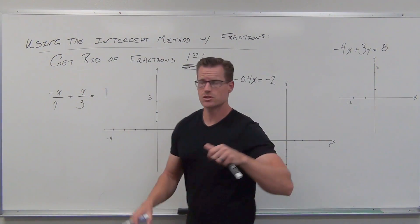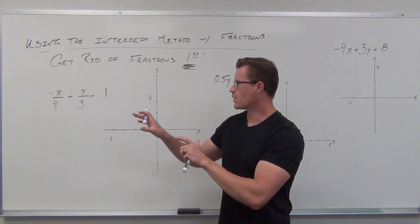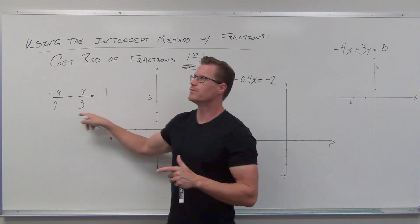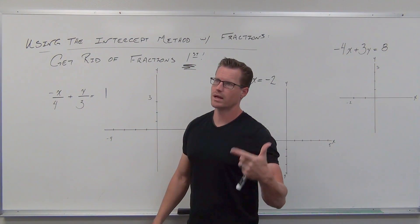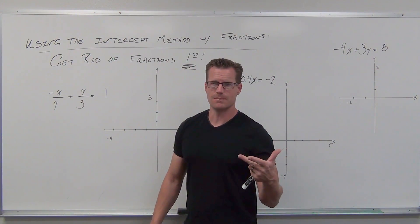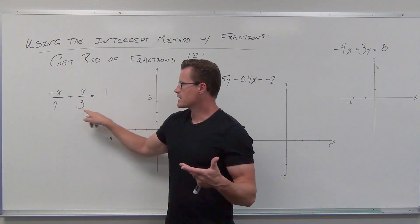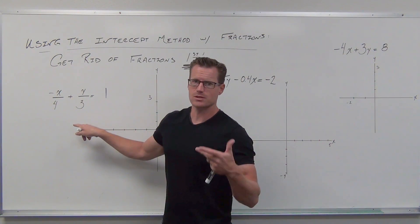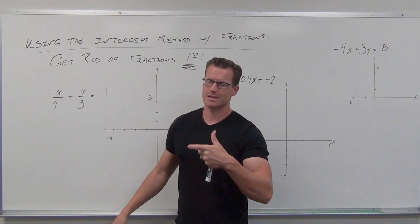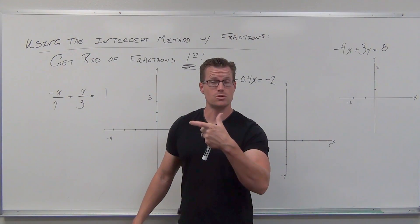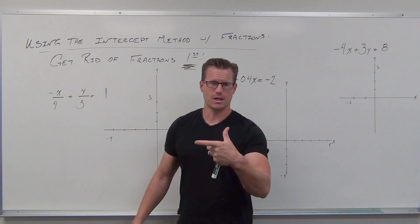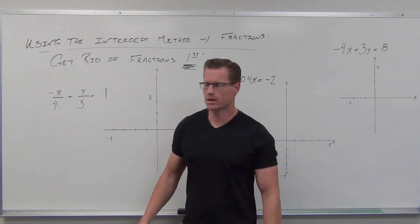One point that we made a while back was if your first term is negative, move the negative to the numerator so you don't get lost anywhere. So our LCD here is, let's see, four and three—four, no, eight, no, twelve, yes. Twelve is your LCD. Because these don't share a factor, it's also the product of those two denominators. That's not always the case, but if your denominators do not share a factor besides one, then you can multiply them to find your LCD pretty quickly.